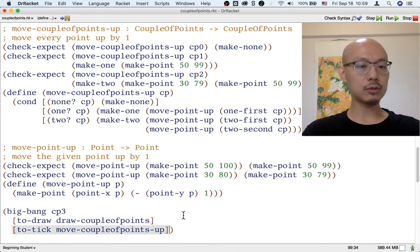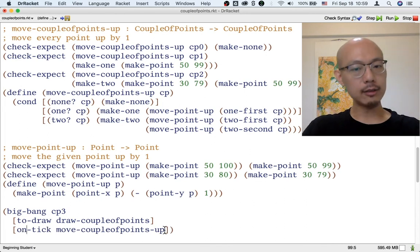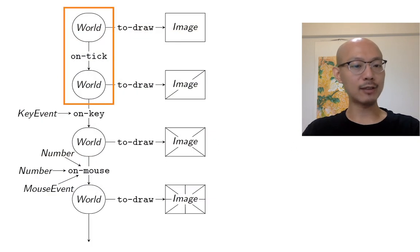Now, it's an on-tick function. Not to tick, on-tick. The on-tick function better have the signature world to world. And it does because a world is a couple of points. So here, couple points to couple points is equivalent to world to world. If you give on-tick the wrong function signature, for example, to give it like a world to image function, it's just going to give you an error.